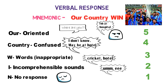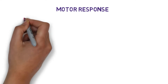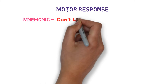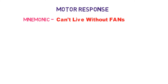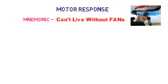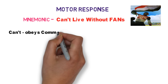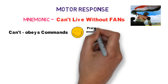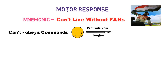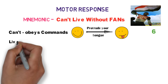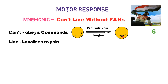Now for motor response, use the mnemonic 'Can't Live Without My Fans' — a statement attributed to Sachin. Keep a picture of his fan in mind. C in 'Can't' stands for obeying commands — if you ask the patient to protrude their tongue or elevate a limb and they do so, the motor score is 6. L in 'Live' stands for localizes to pain — if the patient correctly localizes or tries to remove a painful stimulus, the motor score is 5.